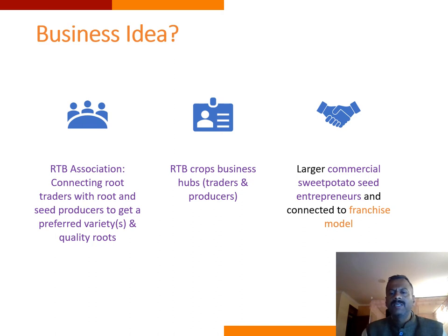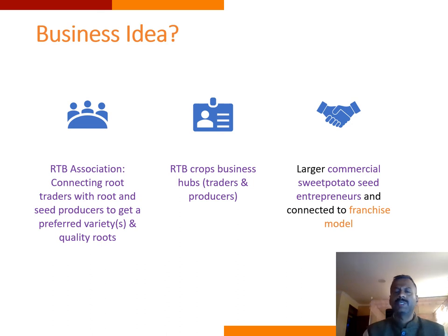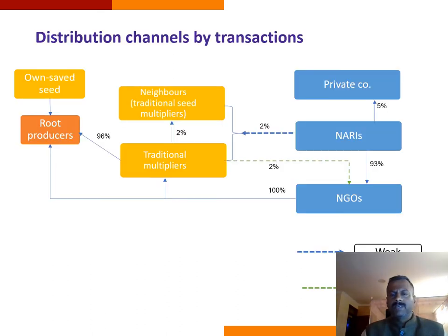Before developing the canvas, I came up with three different business ideas, but after a lot of trial I realized we should have an RTP association — RTP standing for roots, tubers, and bananas. These three crop categories are all vegetatively propagated and face similar challenges. I decided to club them together so we don't only deal with low-value commercial crops but also include high-value crops like potatoes. Dealing with multiple crops makes the sustainability of our solution stronger.